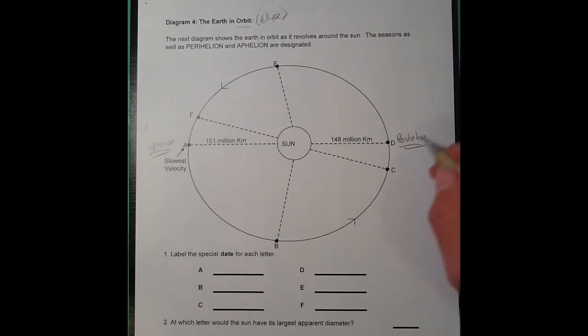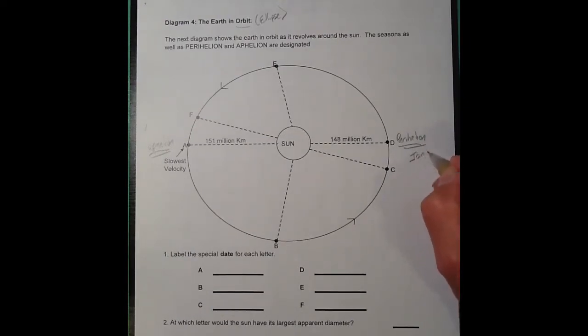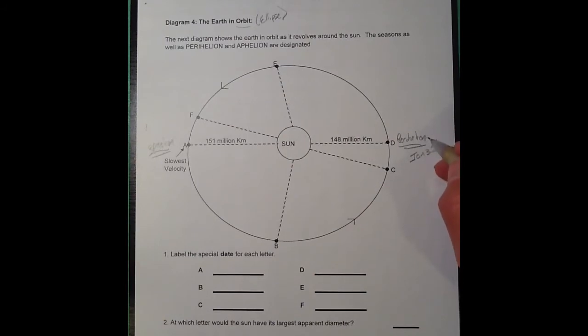Perihelion here is on or around January 3rd each year. We would see the sun just ever so slightly larger, the apparent diameter would look a little bigger. But perihelion is in the winter months in the northern hemisphere.